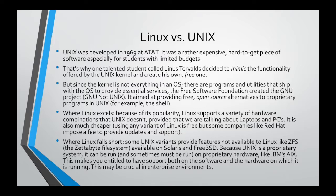Unix is an operating system that was developed in 1969 at AT&T Labs. It was, and still is, an expensive, hard-to-get piece of software, especially for students with limited budgets. So back then, one talented student called Linus Torvalds decided that there should be some other alternative for using Unix, and that alternative should be cheap or free of charge. So he decided to create a kernel that mimics all the features that a typical Unix installation has.